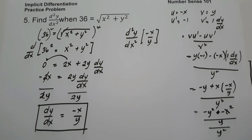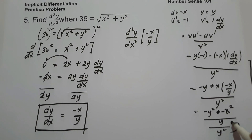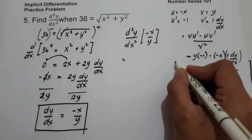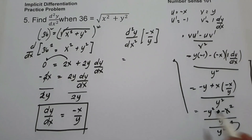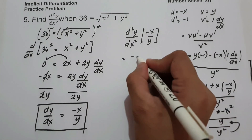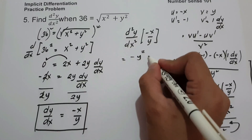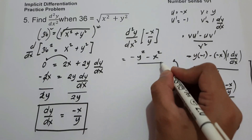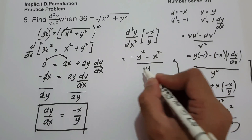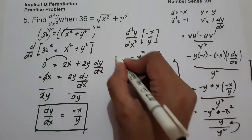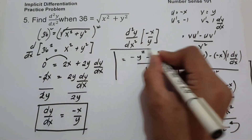To simplify, multiply y squared and y in the denominator. We get negative y squared minus x squared, all over y cubed. And this will be our answer.